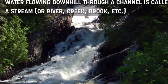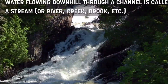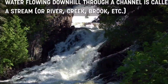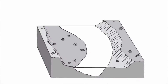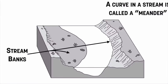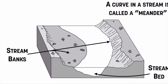Water flowing downhill through a channel is called a stream — that can also be a river, a creek, or a brook, depending on how big it is. The general anatomy of a stream includes stream banks on either side, which are the sides of the river. Any curve in the river is called a meander, and the bottom of the river is called the stream bed.